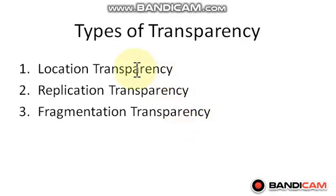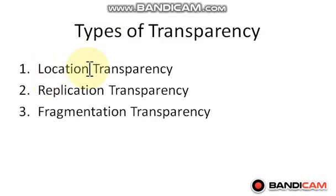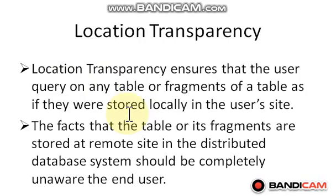Types of transparency. There are three types of transparency: first, location transparency; second, replication transparency; and third, fragmentation transparency.